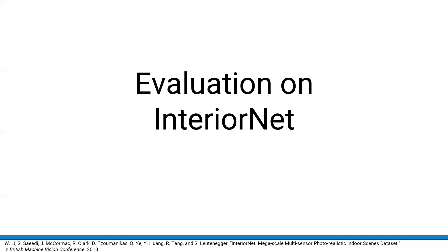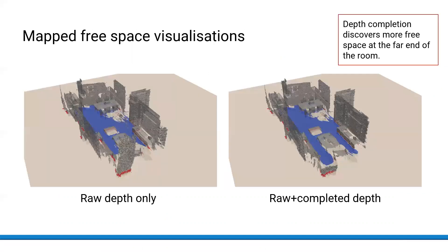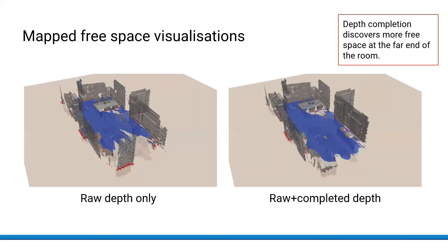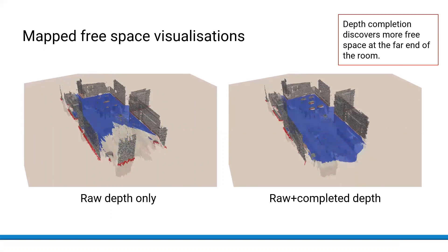We evaluate our approach on InteriorNet, a synthetic dataset of indoor scenes where ground-truth depth is available. These animations show visualizations of the free space in blue discovered by the two mapping strategies. On the left by using the raw depth alone, as in standard mapping,